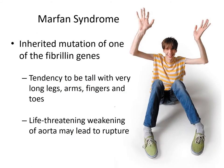Not only does fibrillin form the sheath around elastic fibers, it also helps regulate the rate at which connective tissue develops. If you're not manufacturing fibrillin, connective tissues can develop more rapidly, and you might end up with a condition known as Marfan syndrome. People with Marfan syndrome have a genetic disorder where the gene that codes for fibrillin is not working correctly. They have very long bones, resulting in very tall, lanky bodies. They're also not making functional fibrillin, so they have weakened elastic fibers.